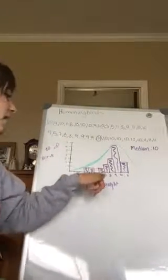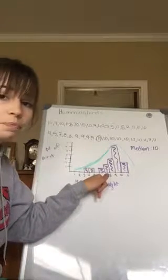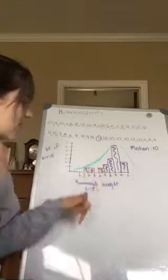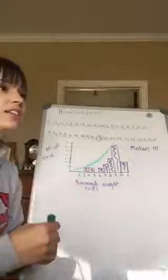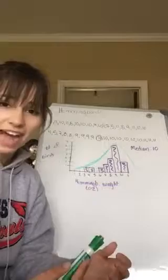because that measure of center isn't affected by these little values out here, by the four ounce and the five ounce birds because it's not, again, putting any power to the values of the data.